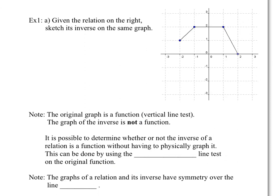In our next example, we're going to find the inverse of a graph. This is our function f(x). It is a function because for every value of x there is only one value of y — we use the vertical line test to confirm this. If a vertical line doesn't touch the graph more than once, it is a function.